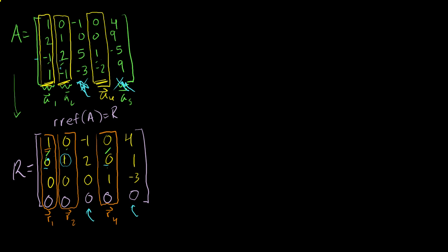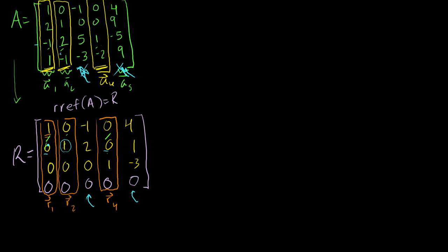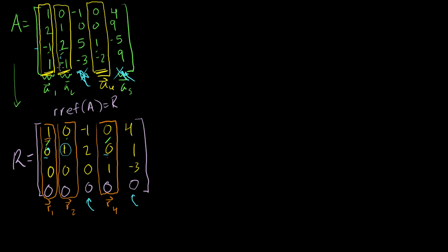In the last video, we saw a method of figuring out what the basis for a column space is. We used these exact examples, where if this was matrix A, I took it and put it in reduced row echelon form, and I figured out which columns in my reduced row echelon form of A are pivot columns. It turned out to be the first, the second, and the fourth. The method is: the corresponding columns in A — the first, second, and fourth — form the basis for the column space.